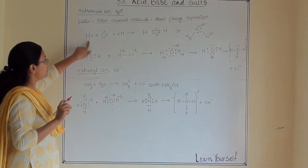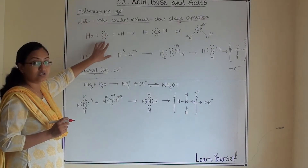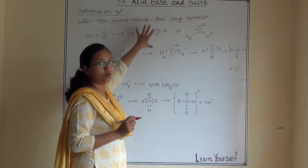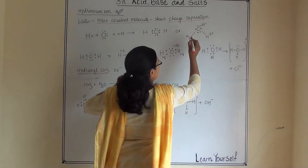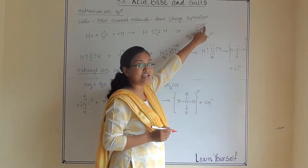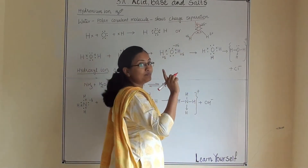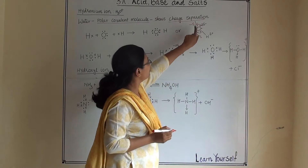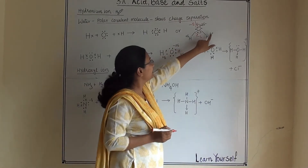Hydrogen has one electron and oxygen has six electrons in its outermost shell. Hydrogen and oxygen combine to form a bond and form a water molecule. Within the water molecule, because there are two unused lone pairs of electrons, oxygen will develop two delta negative charges — one for each lone pair — while both hydrogen atoms will develop delta positive charge.